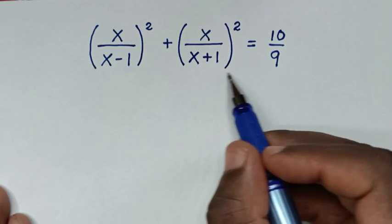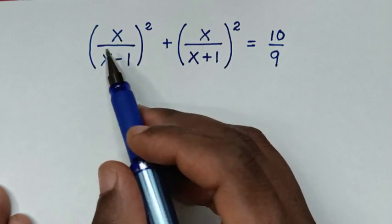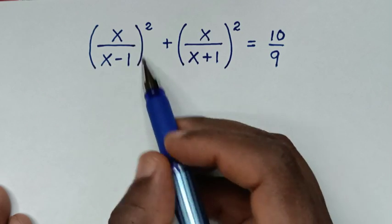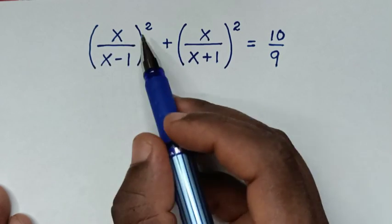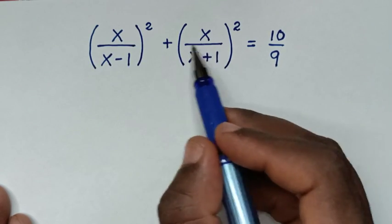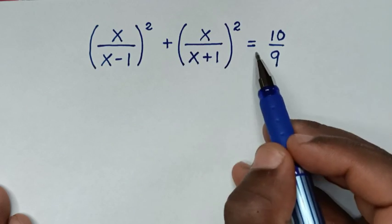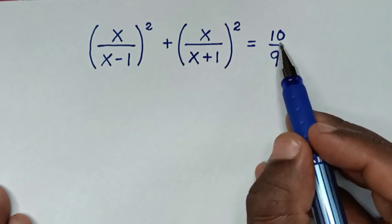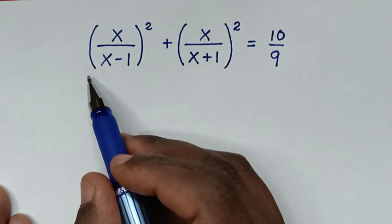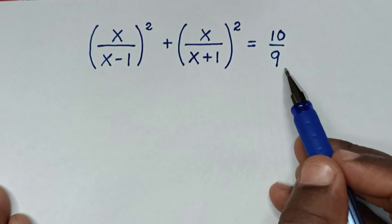You are welcome to solve this math problem: x over (x minus 1), bracket squared, plus x over (x plus 1), bracket squared, is equal to 10 over 9. We need to find the values of x from this equation.